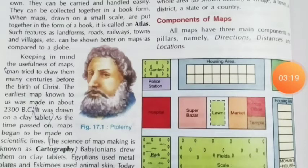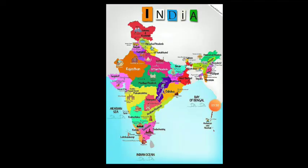Now let's look at types of maps. We have three types: political maps, physical maps, and thematic maps. First, political maps indicate state and national boundaries, capitals, and major cities. Maps drawn to show different states and countries of the world with their boundaries are called political maps.